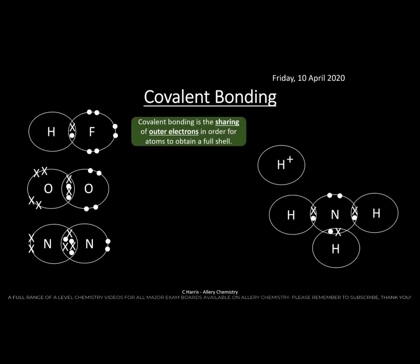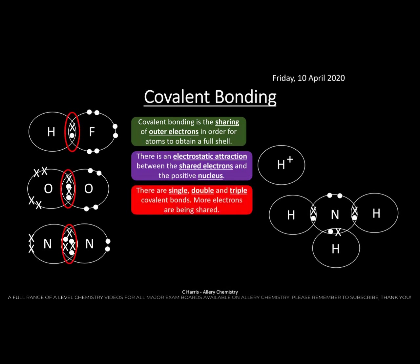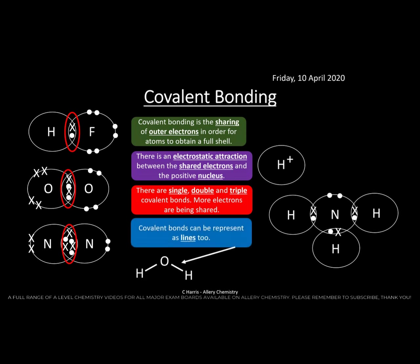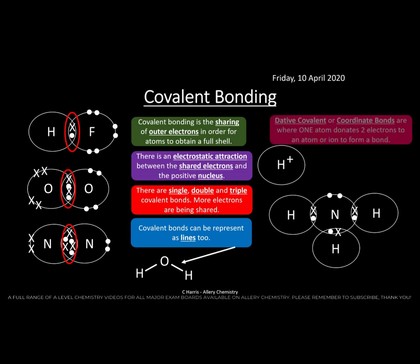Covalent bonding is the sharing of outer electrons so that atoms obtain a full shell — very different from ionic bonding. There is an electrostatic attraction between the shared electrons and the positive nucleus. There are single, double, and triple covalent bonds, with more electrons shared in double and triple bonds. Covalent bonds can be represented as dot-cross diagrams (as seen at GCSE) or as line diagrams, where each line represents one covalent bond.